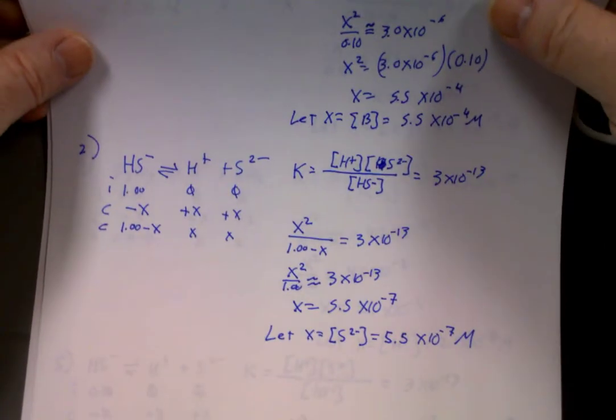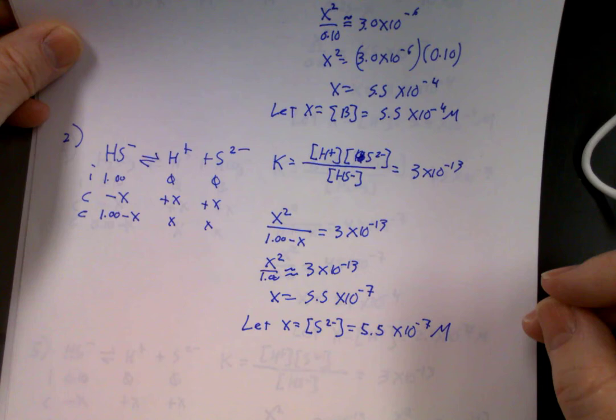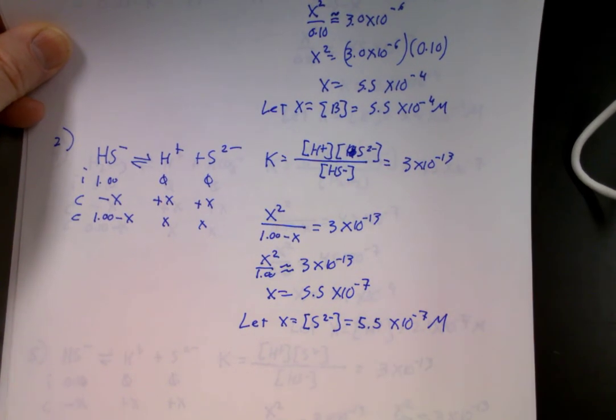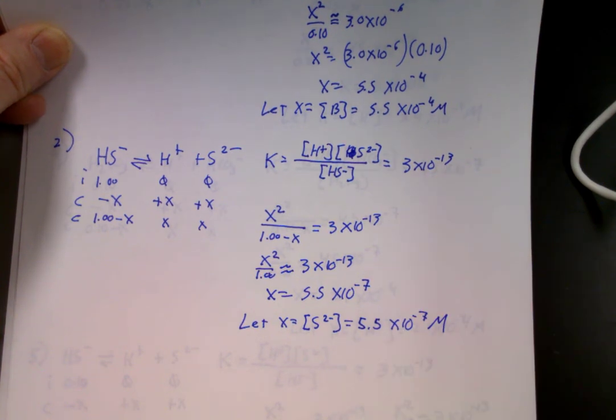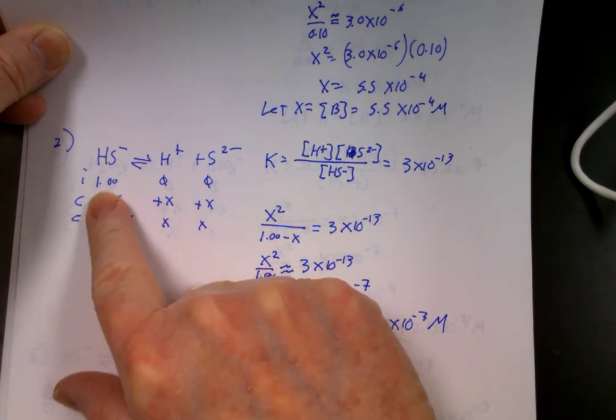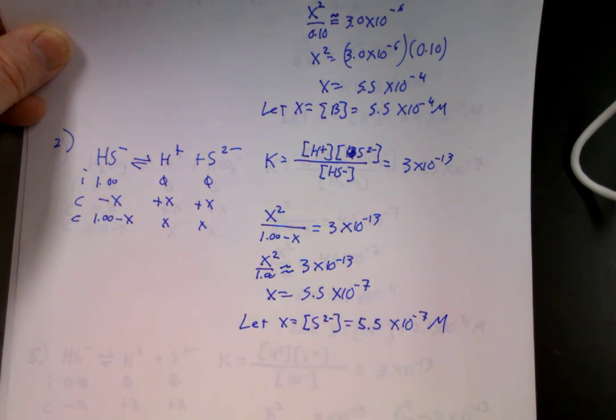Okay, so now let's look at the second question here. Almost identical setup. It's a much, much smaller k, so the approximation is still going to be valid. Our initial concentration is 1.00 this time. Plug into the k, do an approximation.